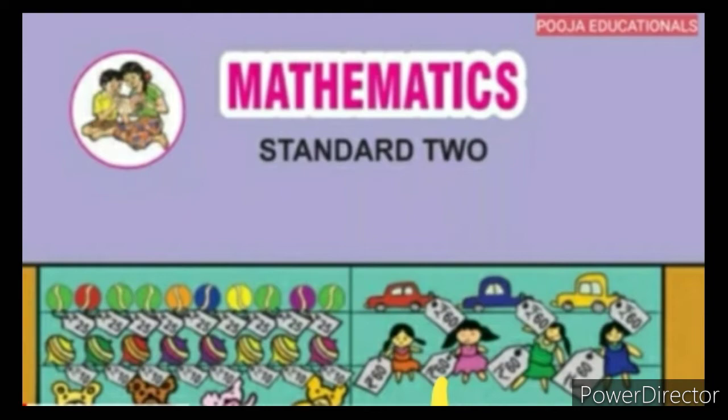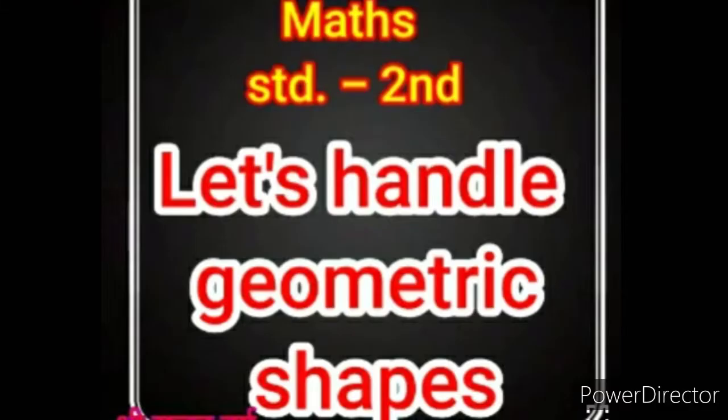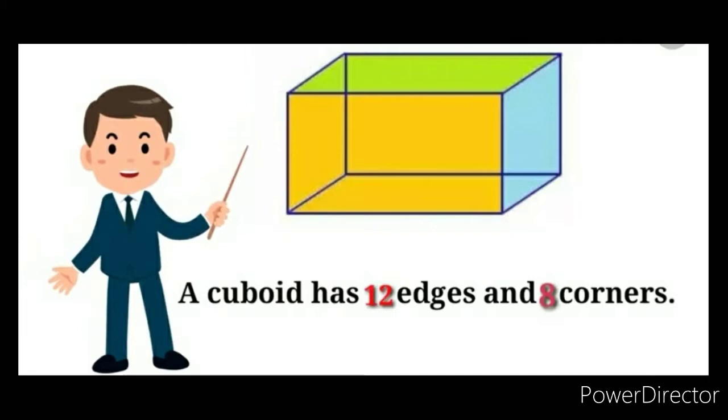Today, we are going to learn chapter 2, Let's Handle Geometric Shapes. In previous lecture, we learned cuboid has 12 edges and 8 corners.